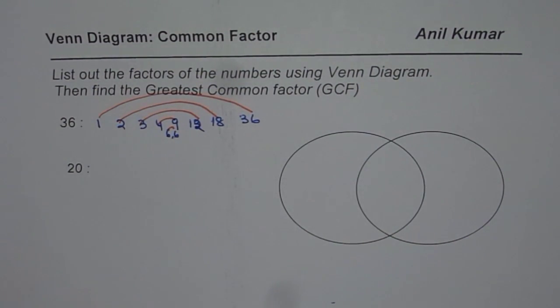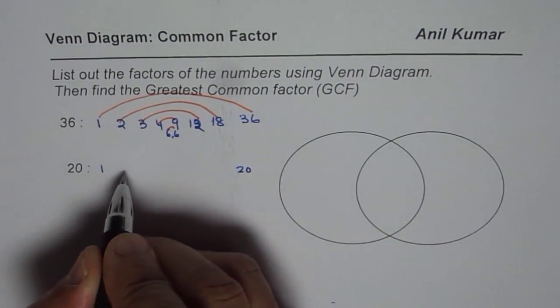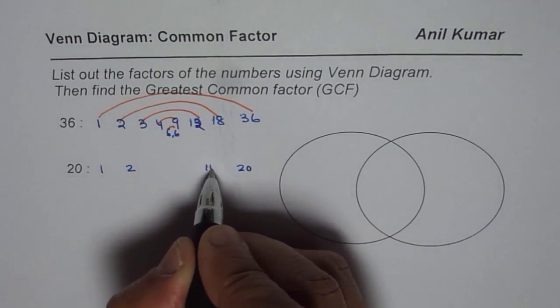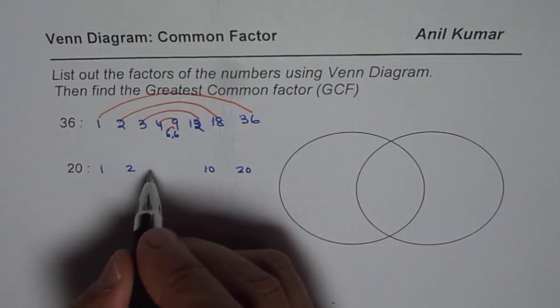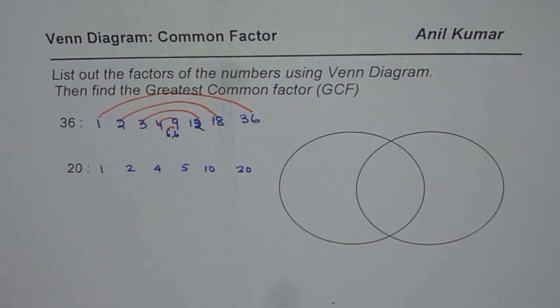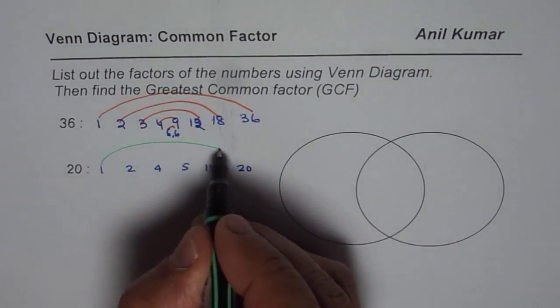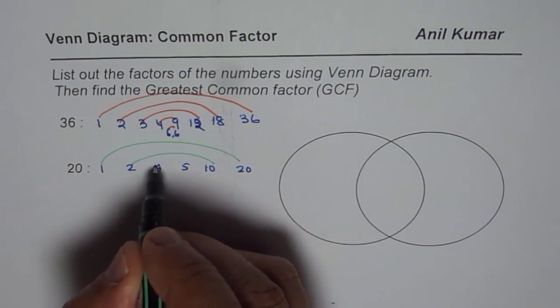Now let us write down factors for 20. 1 times 20, 2 times 10, it does not go with 3, 4 times 5. And then 5 times 4. So we have 6 factors for 20. 1 times 20, 2 times 10, 4 times 5.